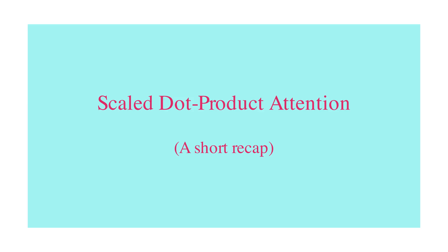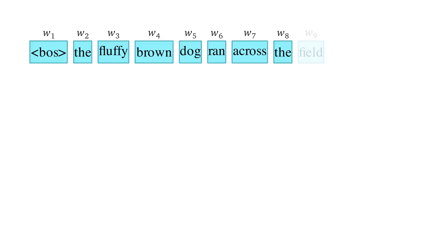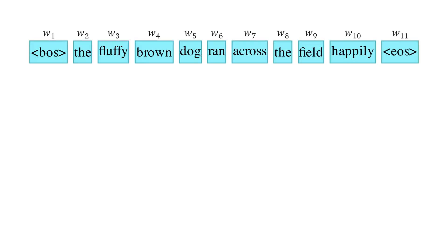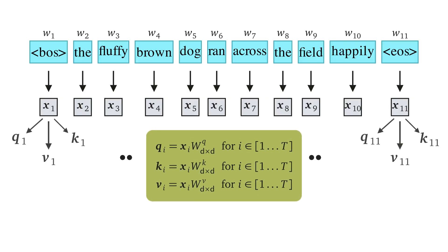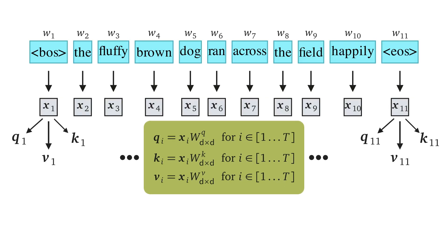First, let's start with a quick overview of scaled dot product attention (SDP). Given a sequence of words — for example, words from an English sentence — the goal of SDP is to find the relationship between these words, where each rectangle represents a word or token. We extract features x1 to xT, where T is the sequence length, and from each xi we compute three vectors Q, K, and V, known as query, key, and value vectors, via matrix multiplication.